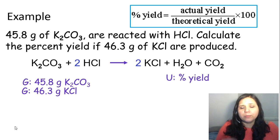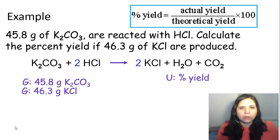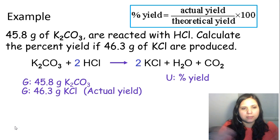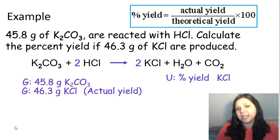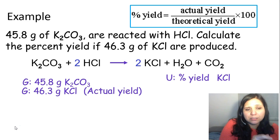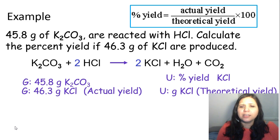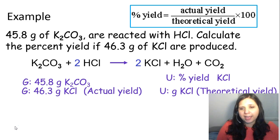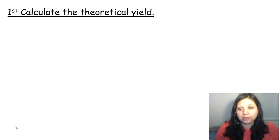We want to find percent yield, but first we need the theoretical yield. In the equation, percent yield equals actual over theoretical — the actual yield is 46.3 grams of potassium chloride. There are three products: potassium chloride, water, and carbon dioxide. We know we're looking for potassium chloride because the actual yield given is in terms of potassium chloride. To find the theoretical yield, I need to calculate grams of potassium chloride.